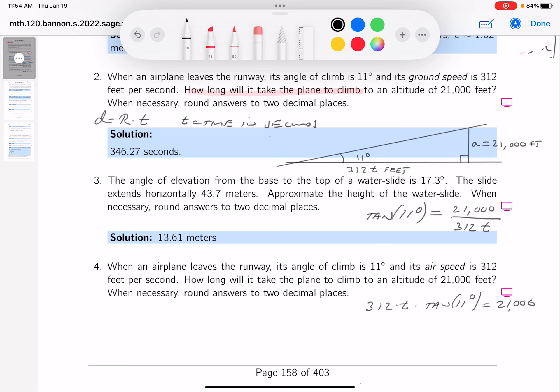How do you do that? Divide by its coefficient. So T would equal 21,000 over 312, and we'd also be divided by tangent of 11 degrees. The unit on this is in seconds.